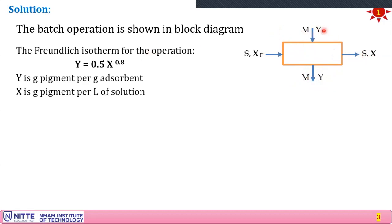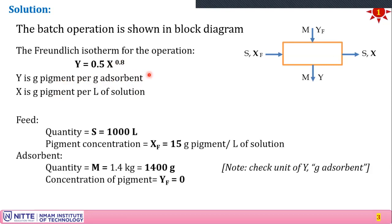The concentration yf is zero when using a fresh adsorbent. The Freundlich adsorption isotherm for this process is given in the problem, where y is grams of pigment per gram of adsorbent and x is grams of pigment per liter of solution. The given data: S = 1000 L, xf = 15 g/L, m = 1400 g. Note that 1.4 kg has been converted to 1400 g because y is expressed per gram of adsorbent — unit consistency is critical here.